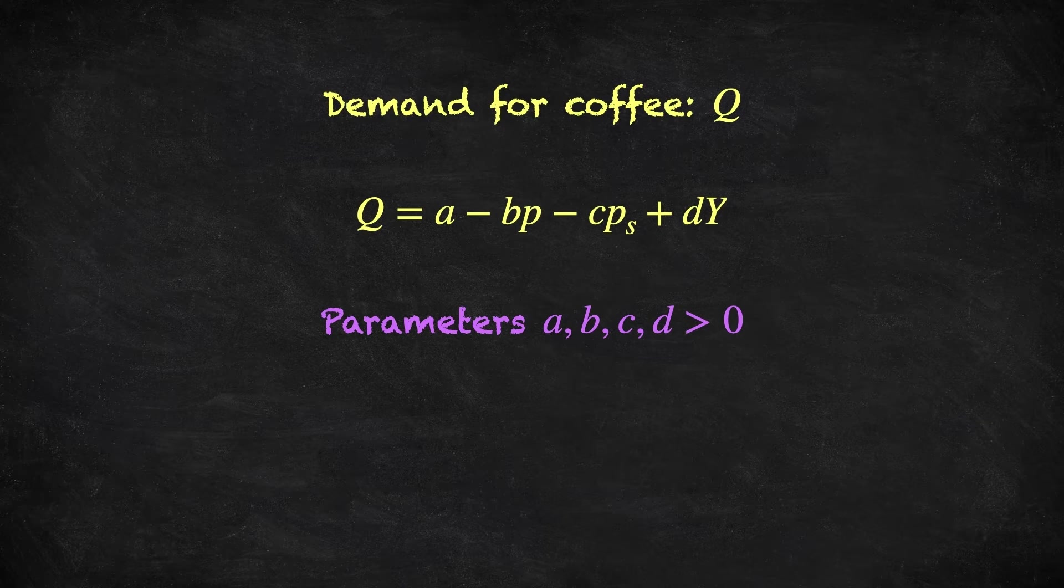Let's have a look at the signs of these parameters. This positive sign here means that changes in the demand for coffee are positively related to changes in the consumer's income, so this consumer will demand more coffee if they get more income. Seems reasonable, although this is just an assumption to bring to the data, and each consumer may be different. This minus sign means that changes in the demand for coffee are negatively related to changes in the price of coffee.